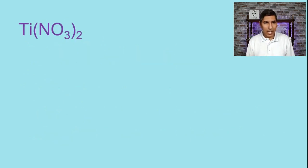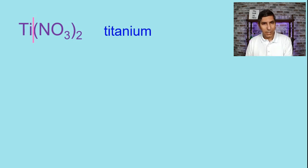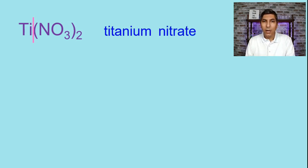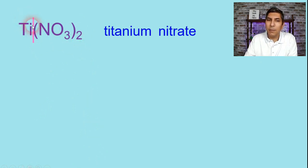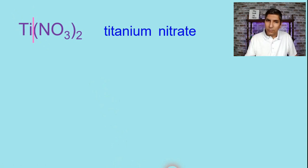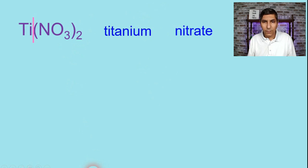Let's do examples with transition metals. Starting with Ti(NO3)2 — split this down the middle. Ti is the symbol for titanium, and NO3 is the formula for nitrate, a polyatomic ion. We notice titanium is a transition metal, so we need to state its charge. The subscript 2 represents the charge titanium has — we unswap the charges and realize titanium has a charge of plus 2. So this is titanium(II) nitrate.